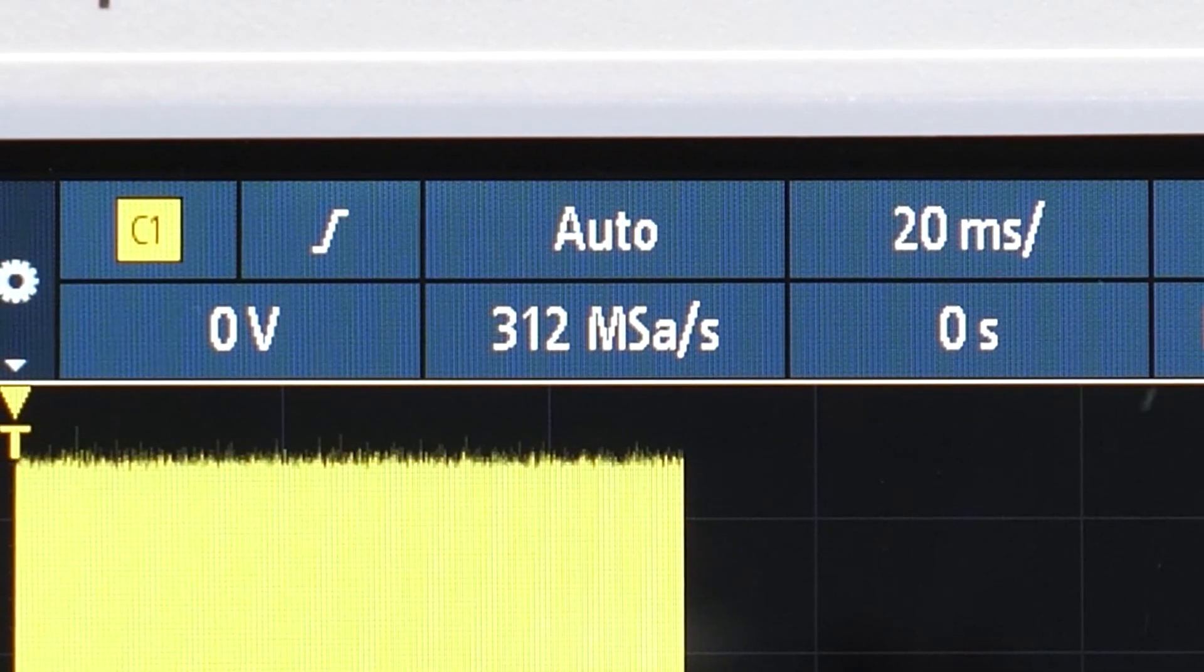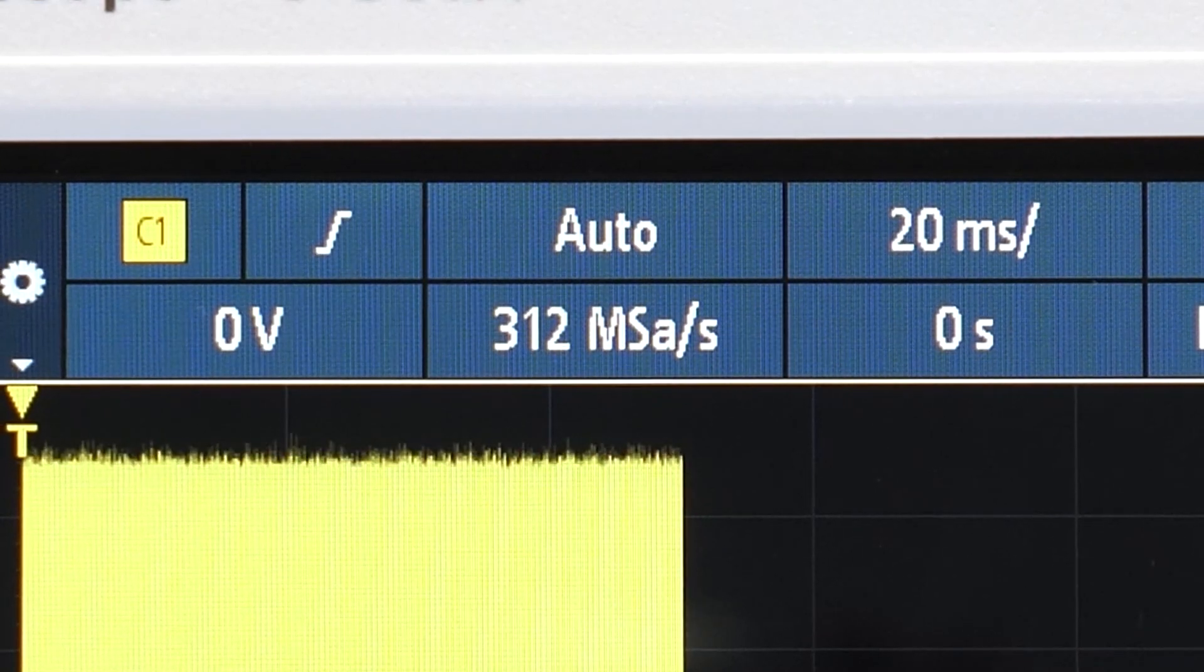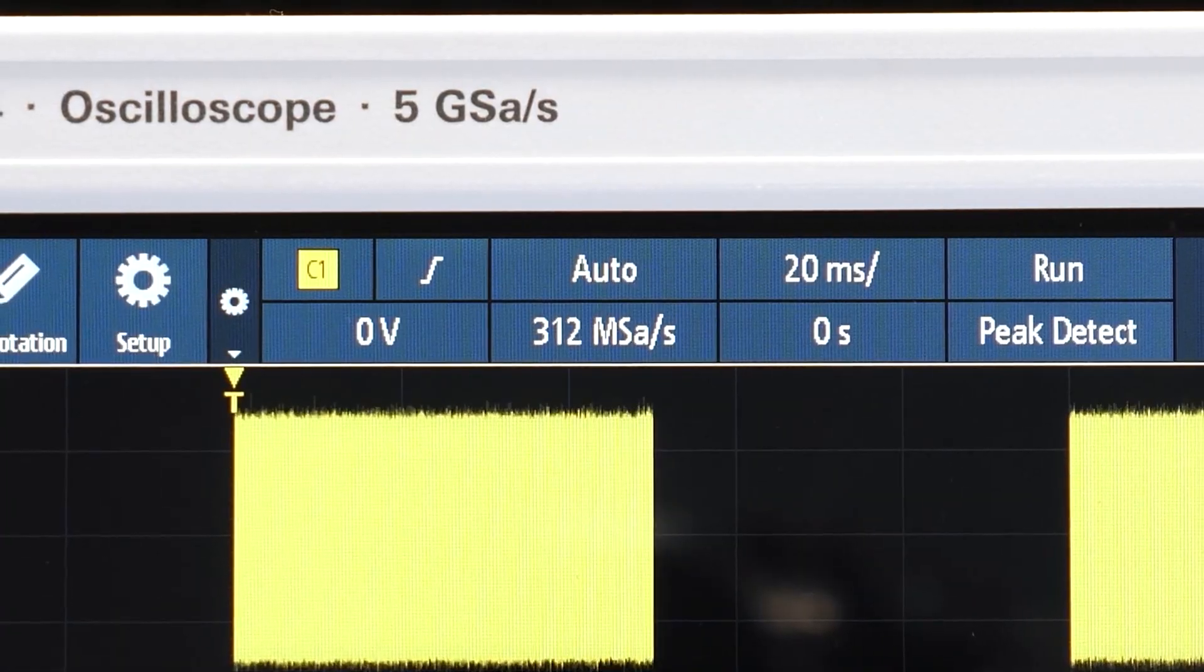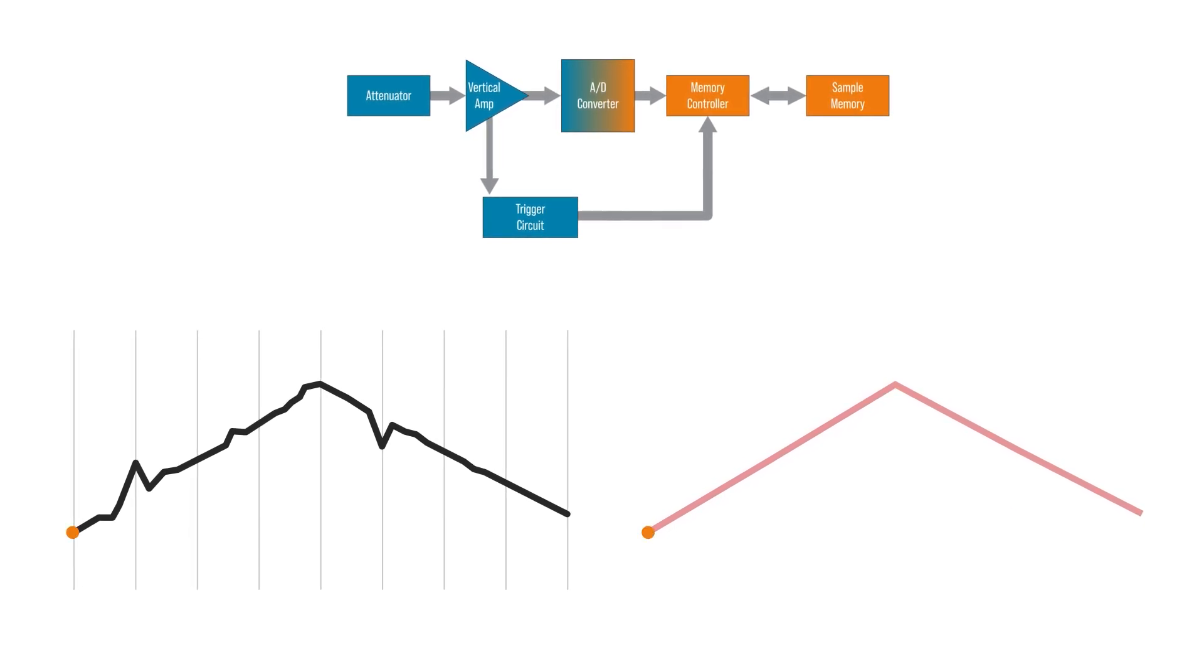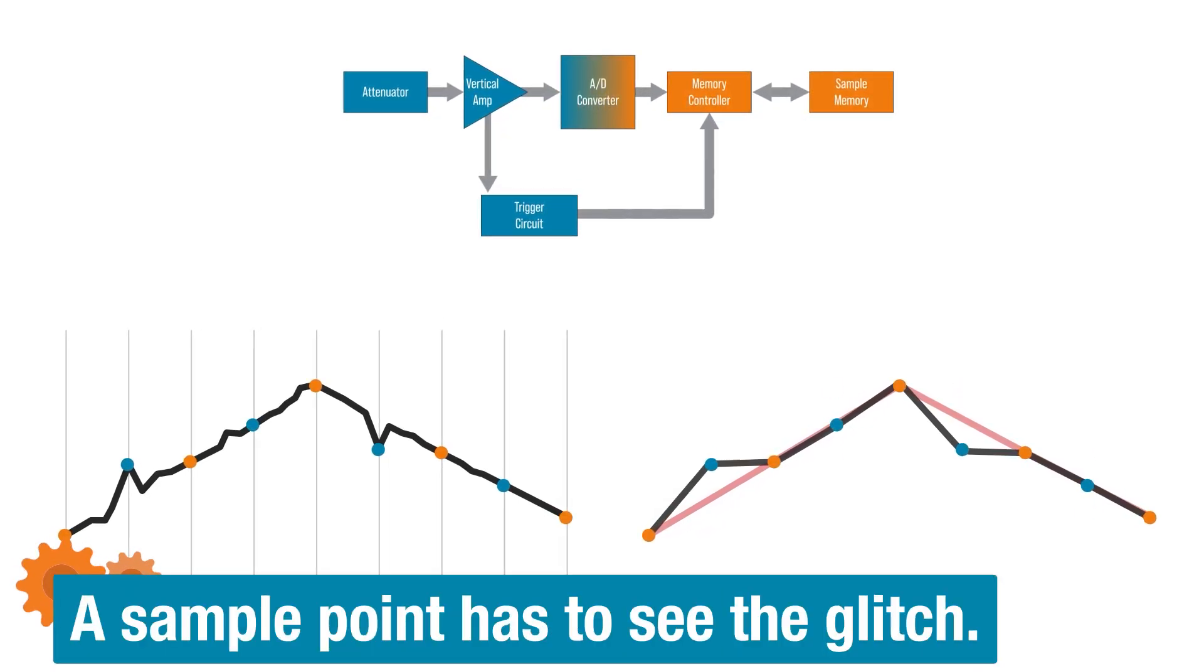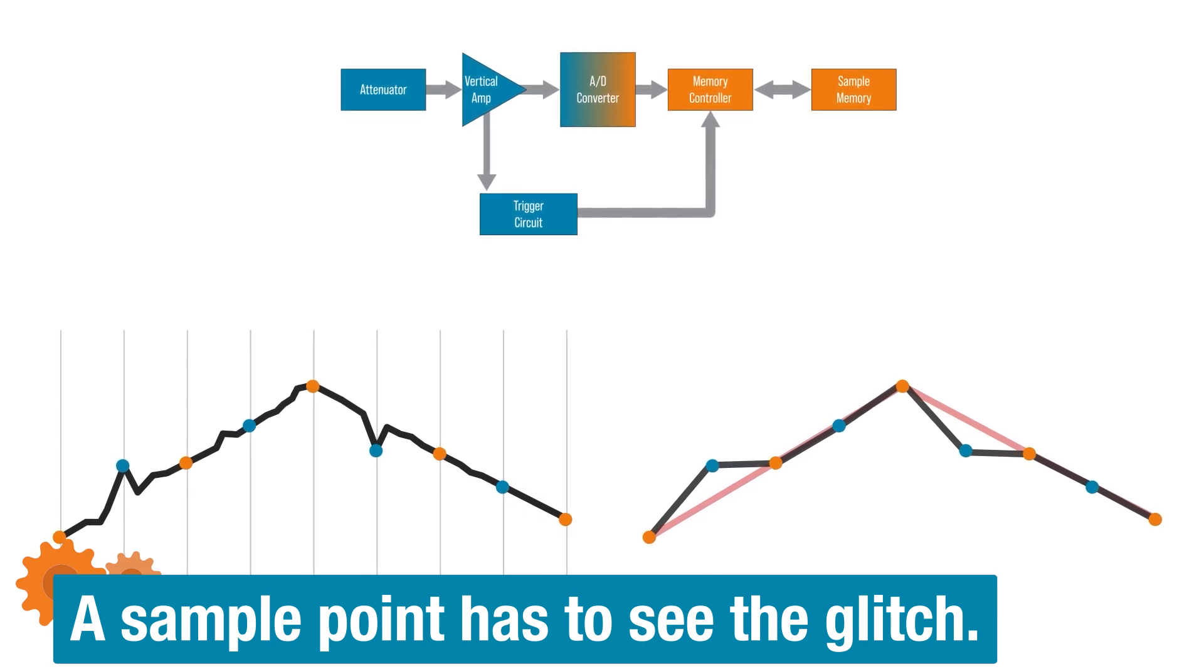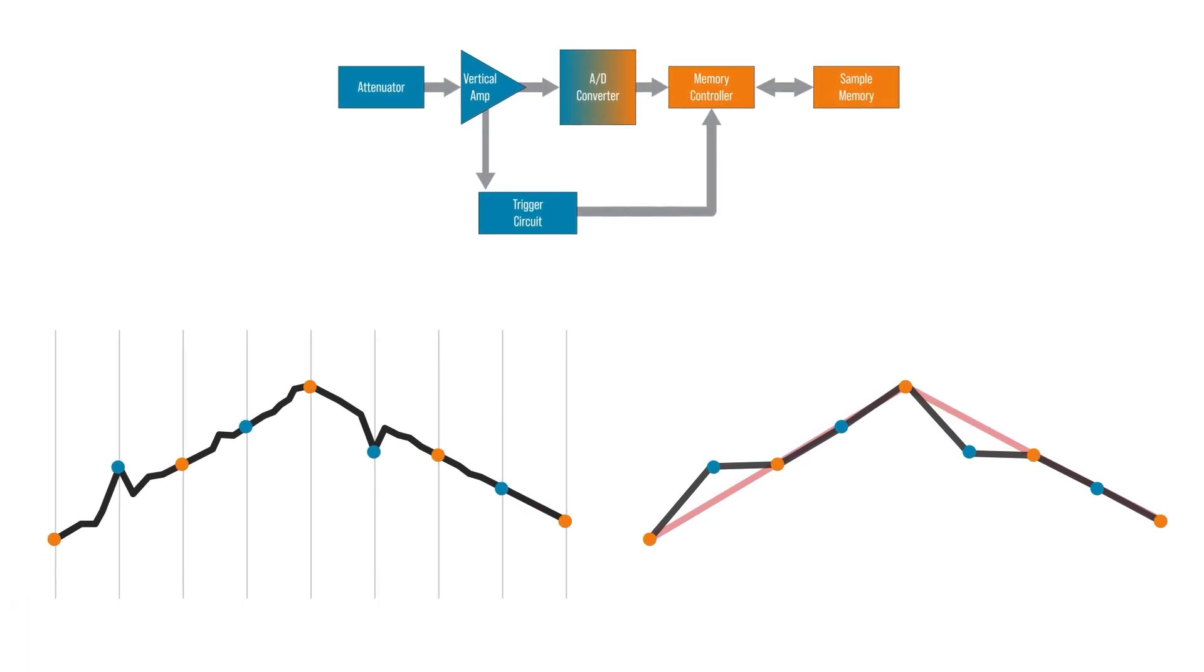In other words, the scope might say 312 mega samples per second, but the ADC is still running at its max rate. Now instead of throwing away those samples, peak detect mode checks for a max and min value. That way if there is a glitch or peak between the waveform samples, then we can still see them on the scope.